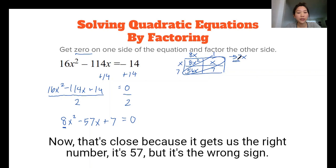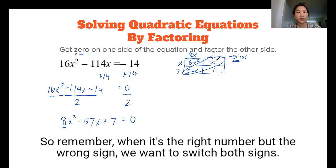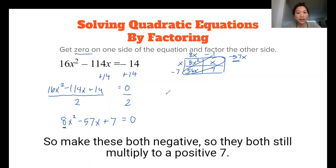Now that's close because it gets us the right number. It's 57, but it's the wrong sign. So remember, when it's the right number but the wrong sign, we want to switch both signs. So make these both negative.